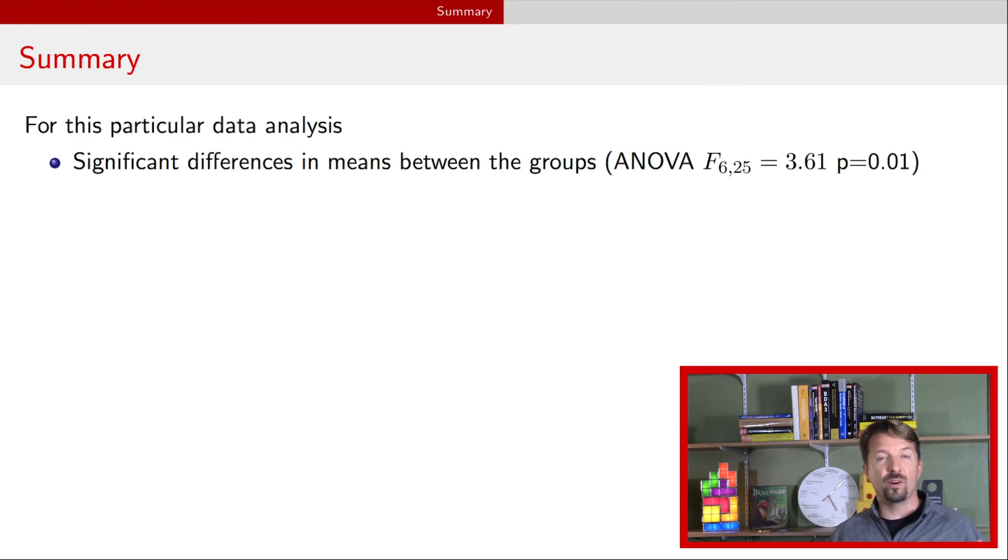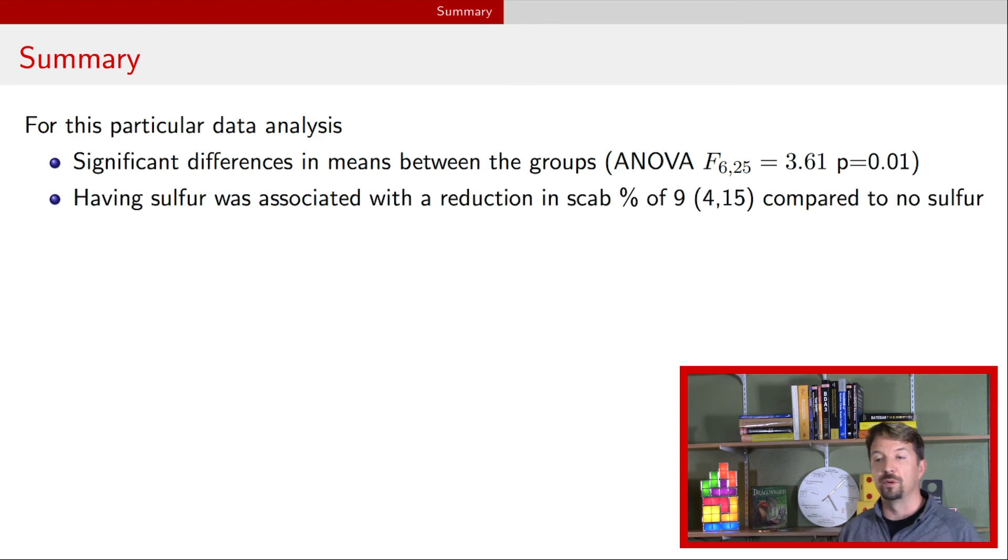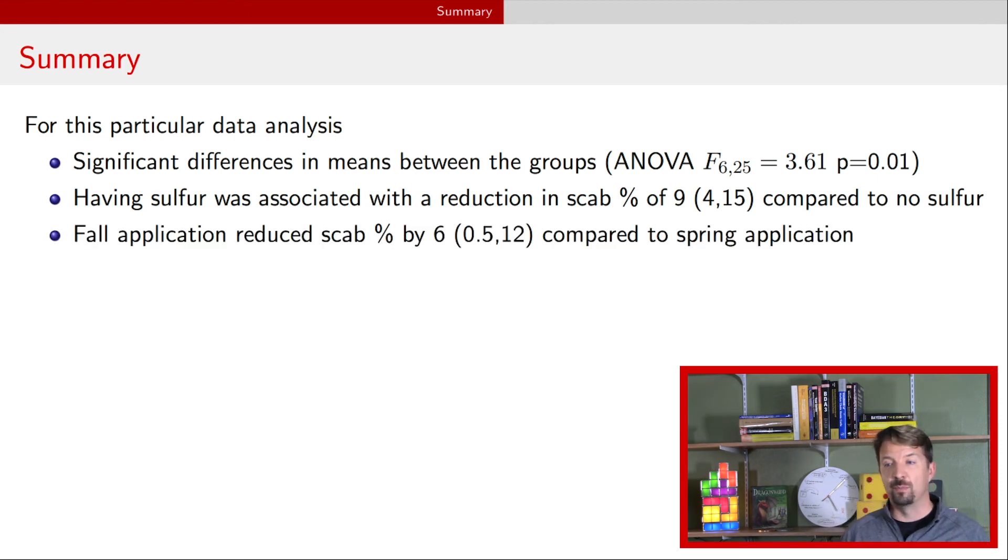So if you were to summarize this particular analysis for a manuscript, you might say something like this, that there was a significant difference in means between the groups. And here's an ANOVA F statistic. You provide the degrees of freedom and the F statistic along with the p-value. That was from our ANOVA table. Then you might say that having sulfur was associated with a reduction in scab percent of 9 with a 95% interval of 4 to 15 compared to having no sulfur. You might say that fall application reduced scab percent by 6 with an uncertainty interval of 0.5 and 12 compared to spring application. And finally, there was a linear trend in sulfur and it was significant.